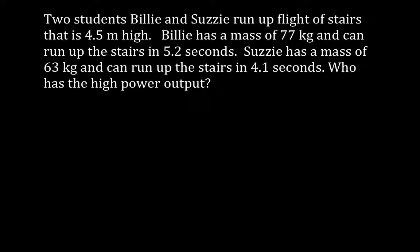We have two people with different masses, and they run up the same stairs at different times. We want to know who has a greater power output. We have two students: Billy and Susie. They run up a flight of stairs that is 4.5 meters high. Billy has a mass of 77 kilograms and he runs up the stairs in 5.2 seconds. Susie has a smaller mass of 63 kilograms and, because she's smaller and actually quicker, she runs up the stairs in 4.1 seconds.